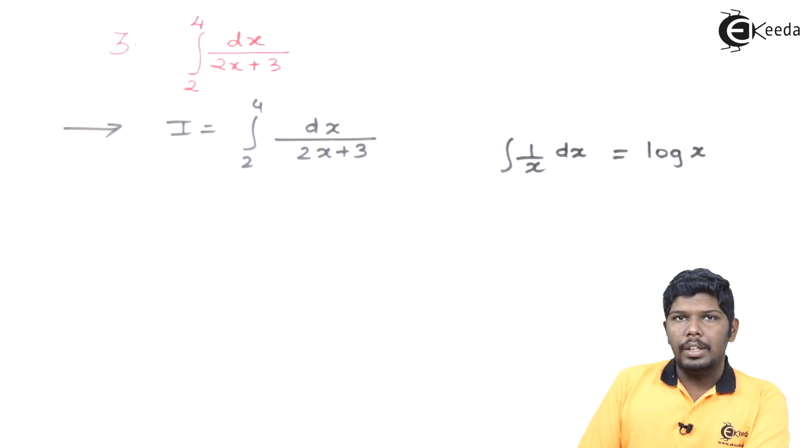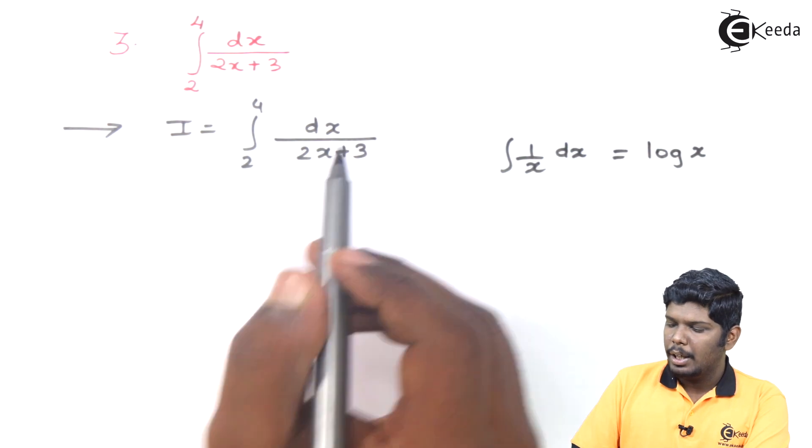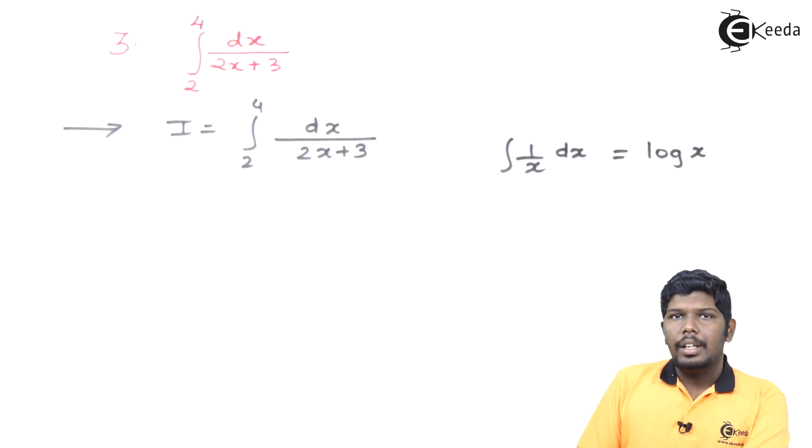But here you can see, we don't have x. We have a composite function. That is, x is replaced by 2x plus 3. Therefore, we will divide by the derivative of that part which is replacing x.